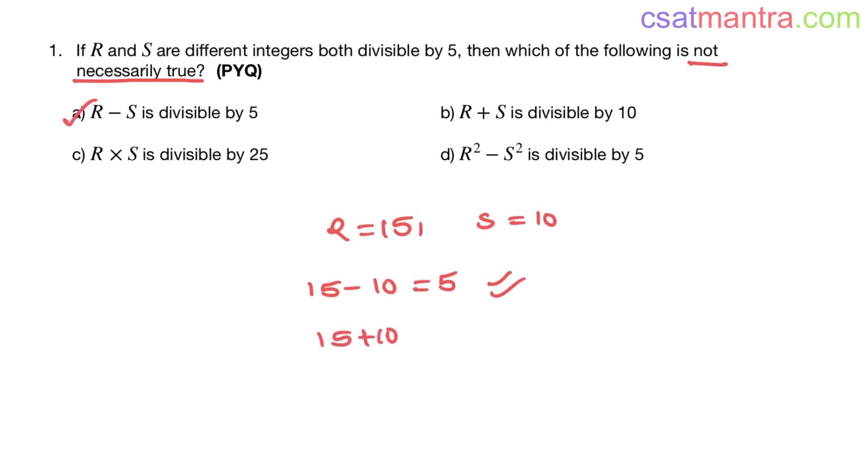15 plus 10, R plus S, that is equal to 25. 25 is not divisible by 10, so option B is not true. So that's your answer, my friends.